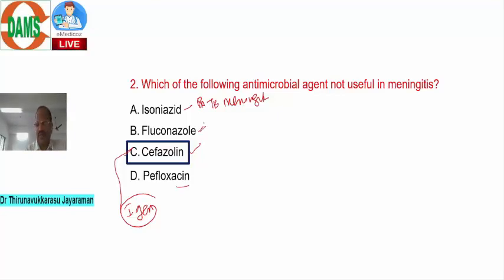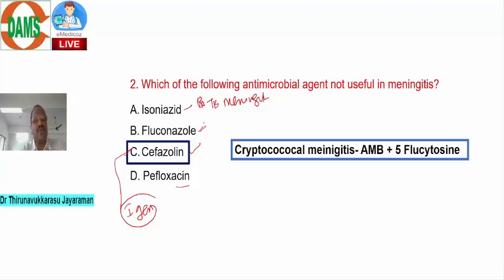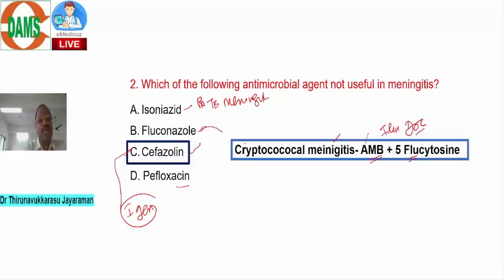Among quinolones, pefloxacin has a wonderful capacity to cross the blood-brain barrier and can be useful for meningitis. As an extra point: for cryptococcal meningitis, the first-line drug of choice is a combination of amphotericin B plus 5-flucytosine. Amphotericin B acts on the cell membrane while 5-flucytosine acts as an antimetabolite on nucleic acids — their combination provides supra-additive synergistic action.